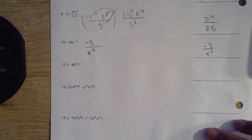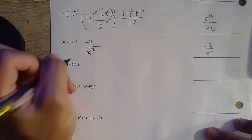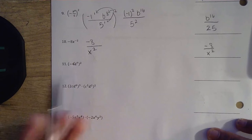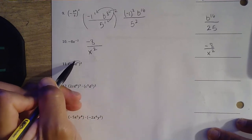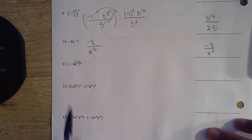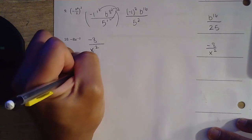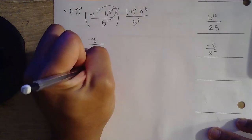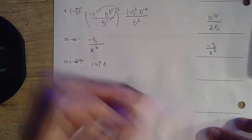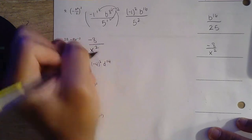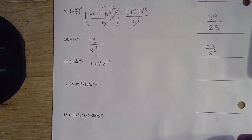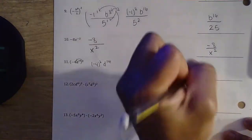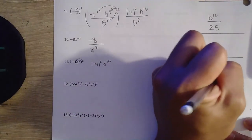Question number 11: negative 4, d to the 7th. We have to distribute that 2 to each of those exponents — that's technically an exponent of 1. So we'd have negative 4 squared, and then d to the — 7 times 2 gives us 14. Negative 4 squared gives us 16, and then d to the 14th. That's our final answer.